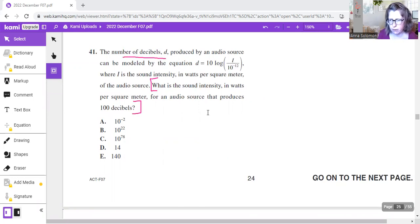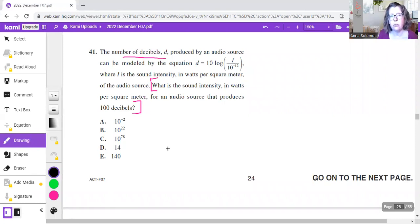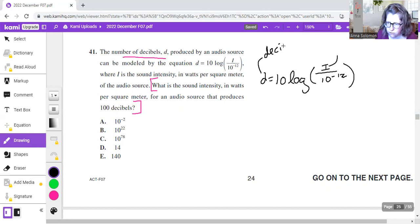The number of decibels d produced by an audio source can be modeled by the equation where i is the sound intensity in watts per square meter of the audio source. What is the sound intensity in watts per square meter for an audio source that produces 100 decibels? This is a great example of a time when we do not need to understand what is happening. We just need to link the variables to the words that they represent.